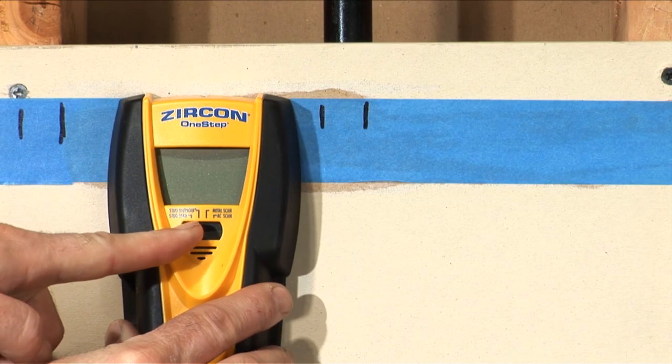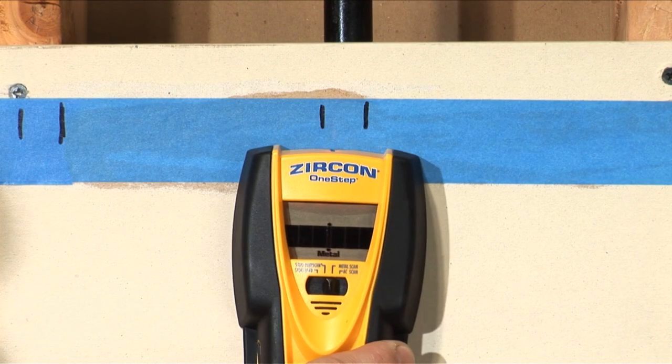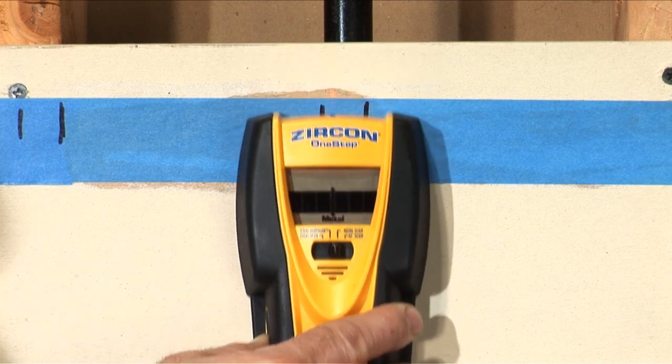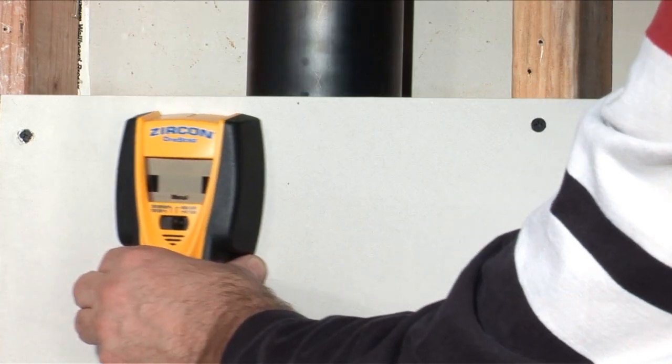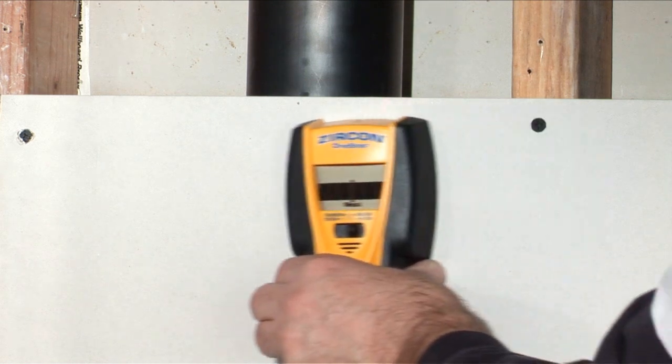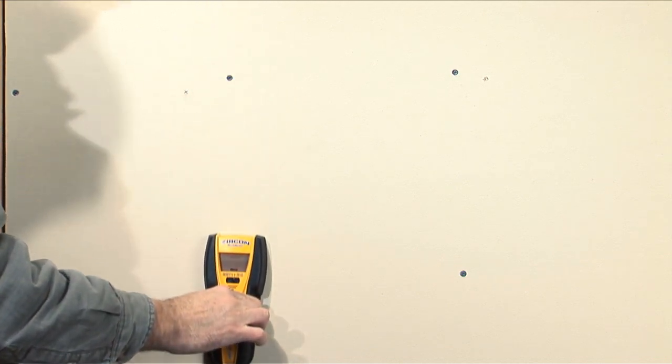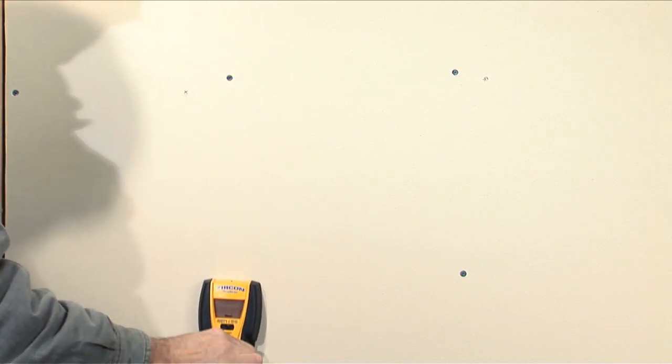If your tool has metal scan mode, turn it on and scan vertically along the object. If you get a consistent metal reading, you've probably found a metal pipe or conduit. If you get no metal reading at all, you've probably found a plastic pipe. If you get intermittent metal readings, you're finding the drywall nails or screws holding the wall to the stud.